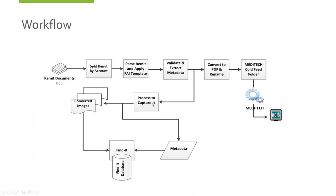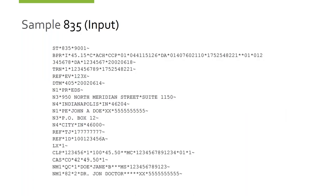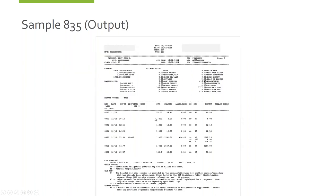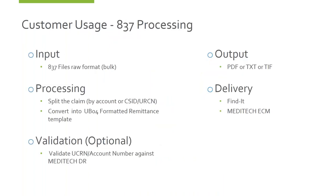Within Meditech, generally you set up the form so that it's viewable in billing and it'll show on the billing accounts right where your scan documents do. Alternatively, or additionally, you can also send it into FindIt. Here's an example of a raw 835 — not very readable unless you're very familiar with electronic claims. And this is an example of the formatted template that we turn it into. You can see all the charges and the explanation codes at the bottom. Much more readable for a user.